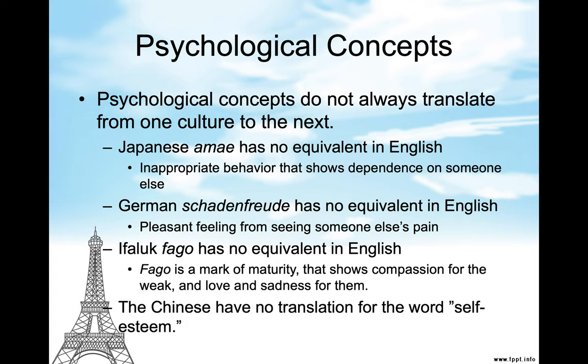In German, "schadenfreude" has no equivalent in English — it is the pleasant feeling from seeing someone else's pain or suffering. "Fago" has no equivalent in English; fago is a mark of maturity that shows compassion for the weak and love and sadness for them. The Chinese have no translation of the word "self-esteem" — it isn't a word or concept that the Chinese use.